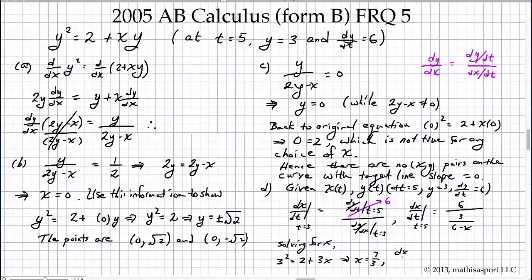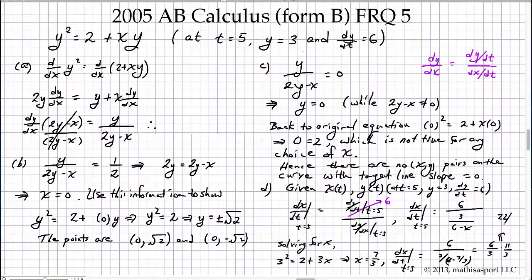Putting it all together, dx/dt at t = 5 equals 6 over (3 divided by (11/3)). That simplifies to 6 over (9/11), or equivalently 6 times (11/3) divided by 3, which equals 22/3.